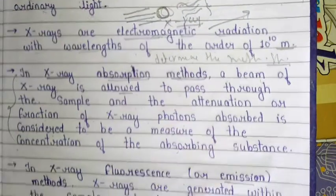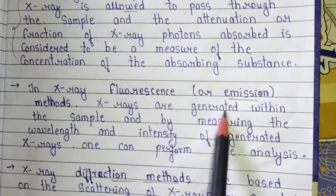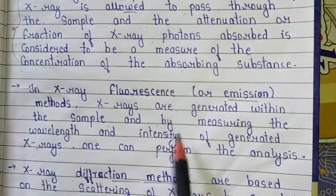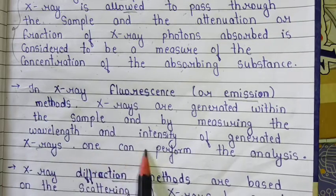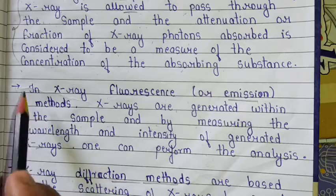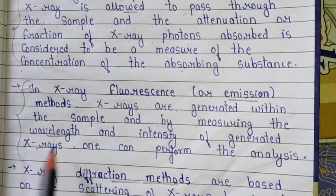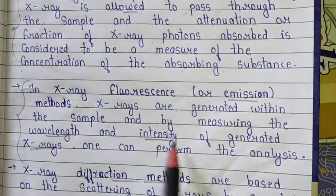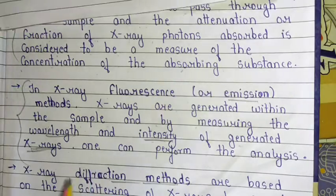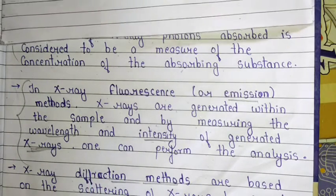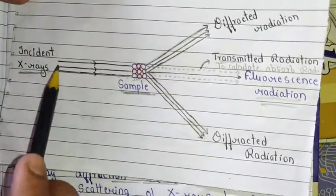The second important method is X-ray fluorescence or emission. In this method, X-rays are generated within the sample, and by measuring the wavelength and intensity of the generated X-rays, one can perform the analysis. Using this fluorescence method, we can easily find out the wavelength and intensity of the generated X-rays. This is a very important method to determine the wavelength and intensity of any X-rays.